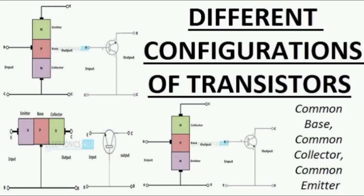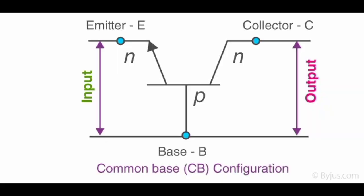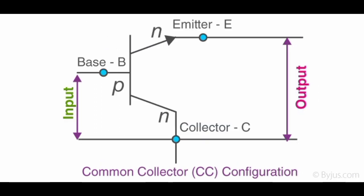There are three types of configuration in a transistor: CB common base mode, CC common collector mode, and CE common emitter mode. In CB type, we give input to the base and emitter terminal of the transistor, and we take output from the base and collector terminal. In CC type, we give input to the base and collector terminal of the transistor, and take output from the emitter and collector terminal.